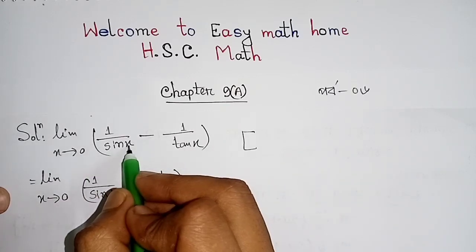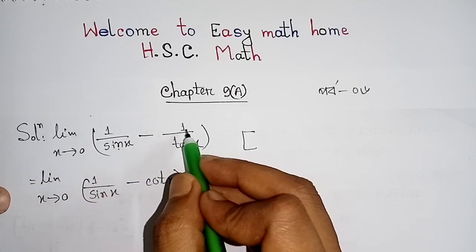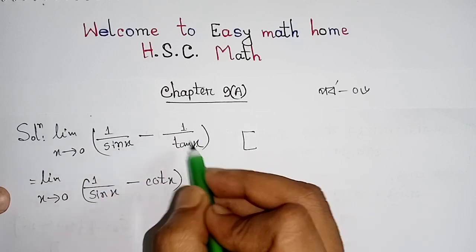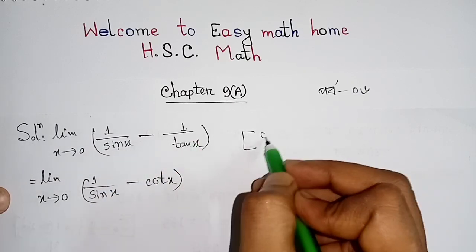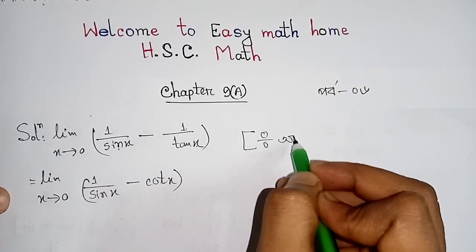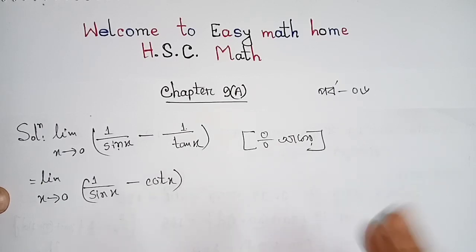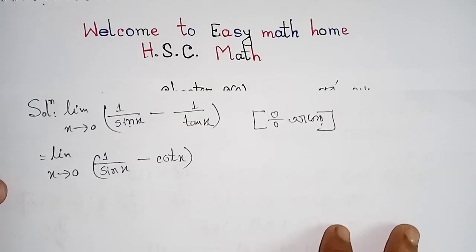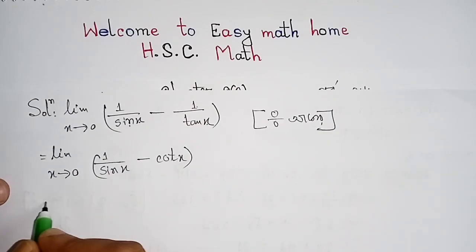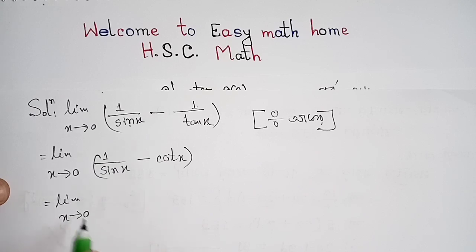First, if we substitute x=0: sin(0)=0, so 1/0 is undefined; tan(0)=0, so 1/0 is also undefined. This gives us an infinity minus infinity, which reduces to a 0/0 indeterminate form.